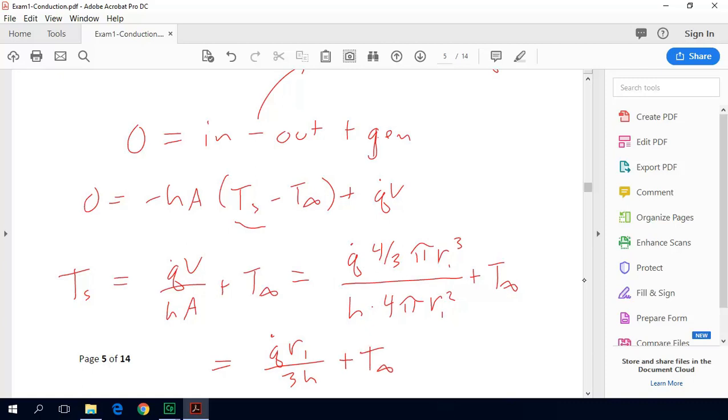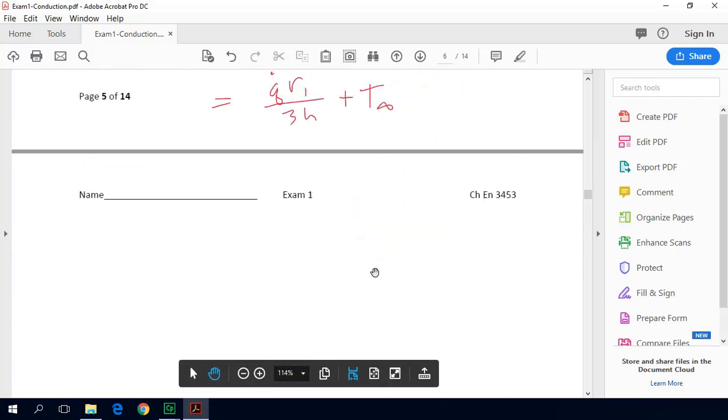That was just a result of canceling out some of these terms, moving this 3 down to here, getting rid of that term, getting rid of the pi. So it ends up being a pretty simple equation.